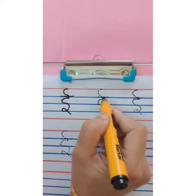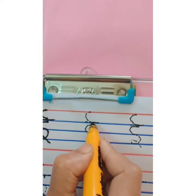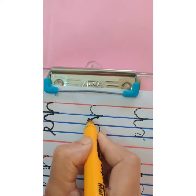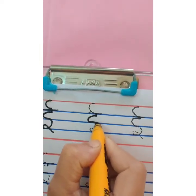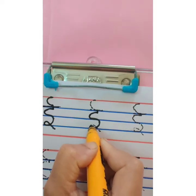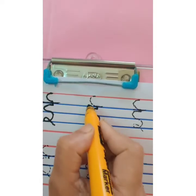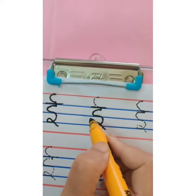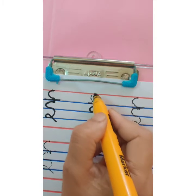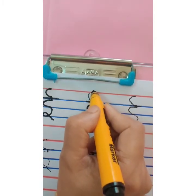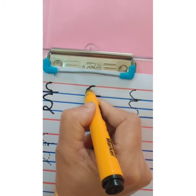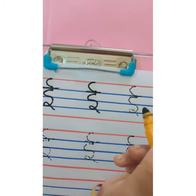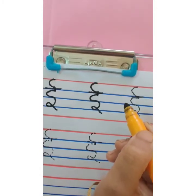Now let's revise how to write badi e. Start with the first blue line, small standing line. Make a c, then ulta c. This is s. Go up, take a loop. Overhead small sleeping line. This is chhoti e. And then children we are going to give small c from red line to first blue line, like this. This is badi e.